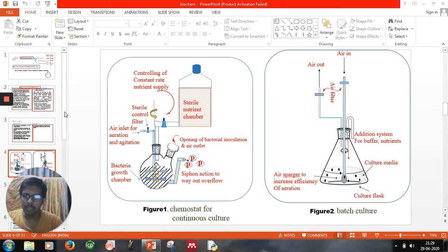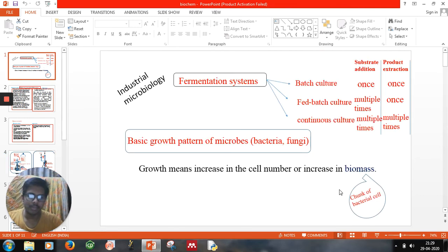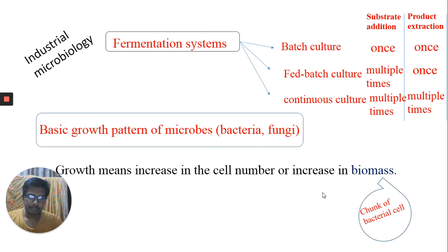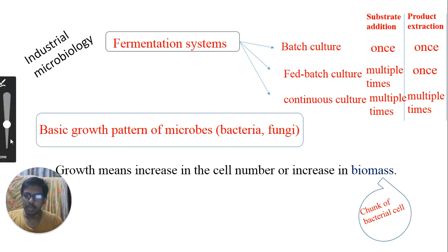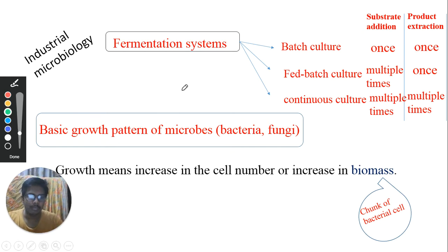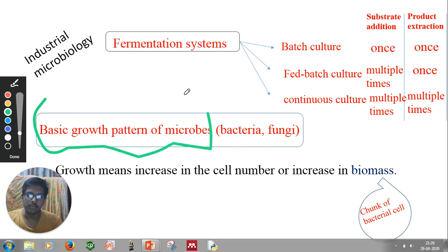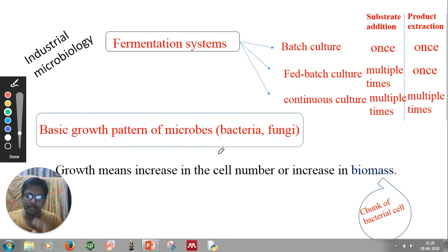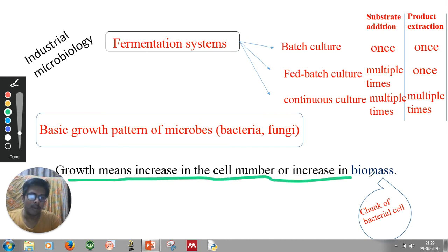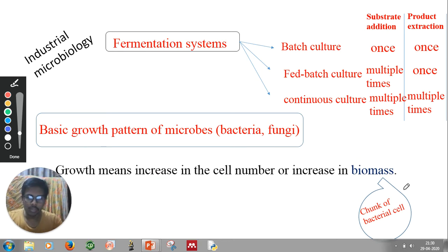In this video we will discuss the various fermentation systems. To understand fermentation systems, it is important to know about the bacterial growth curve. We have come across this concept — the typical bacterial growth pattern of microbes, discussing bacteria and fungi. Growth means increasing number of cells and biomass; increasing biomass indicates the growth of a bacteria culture.